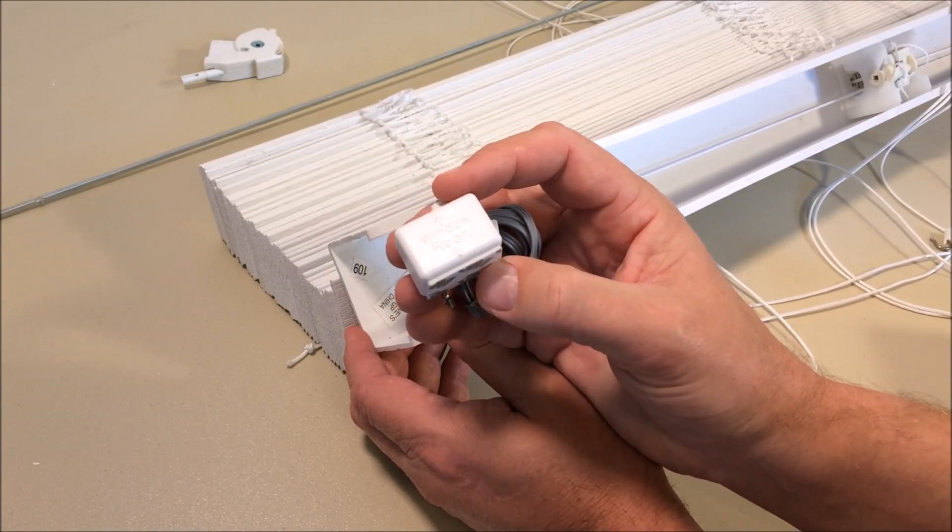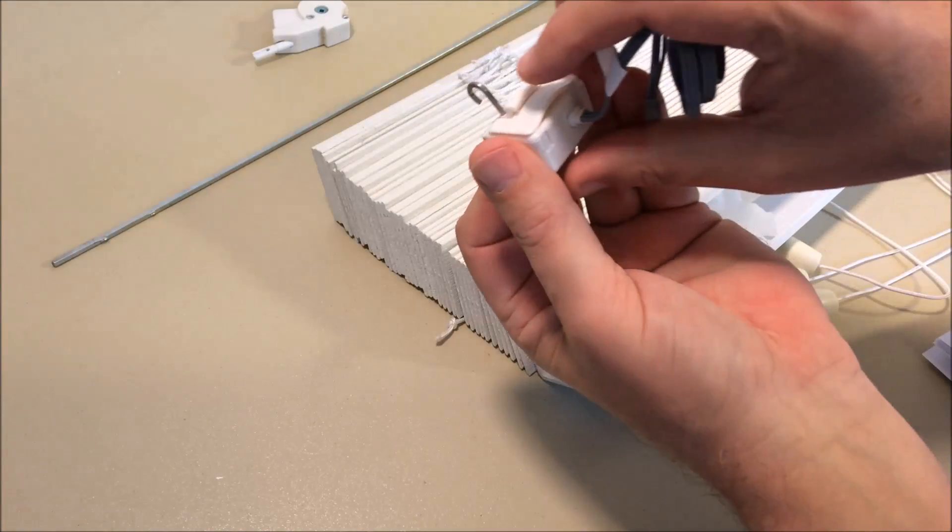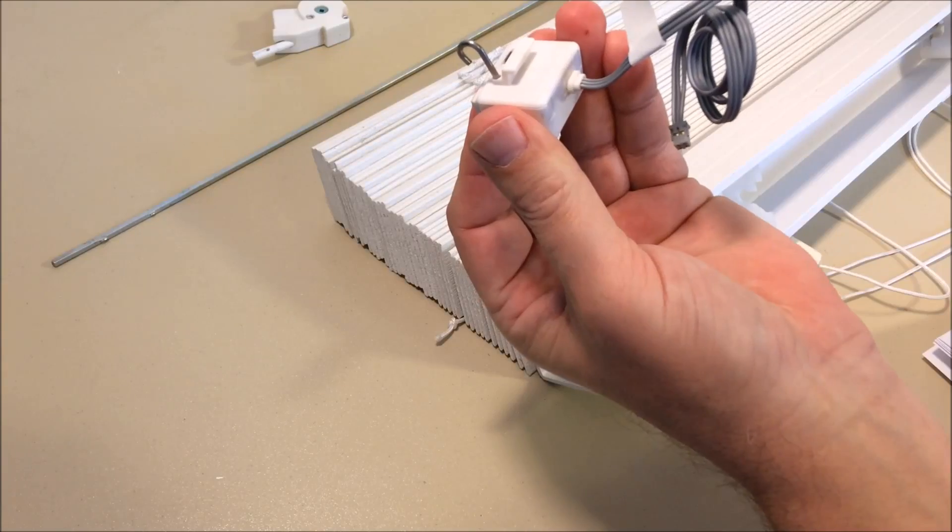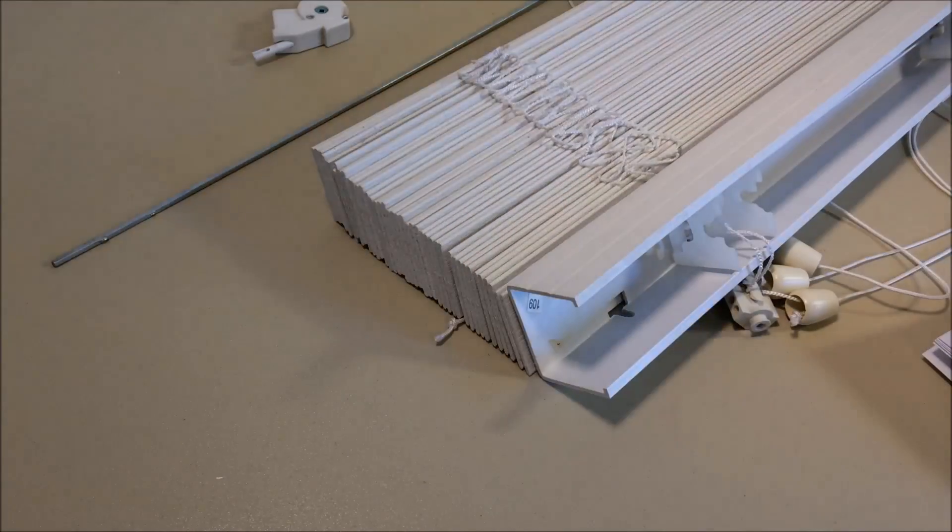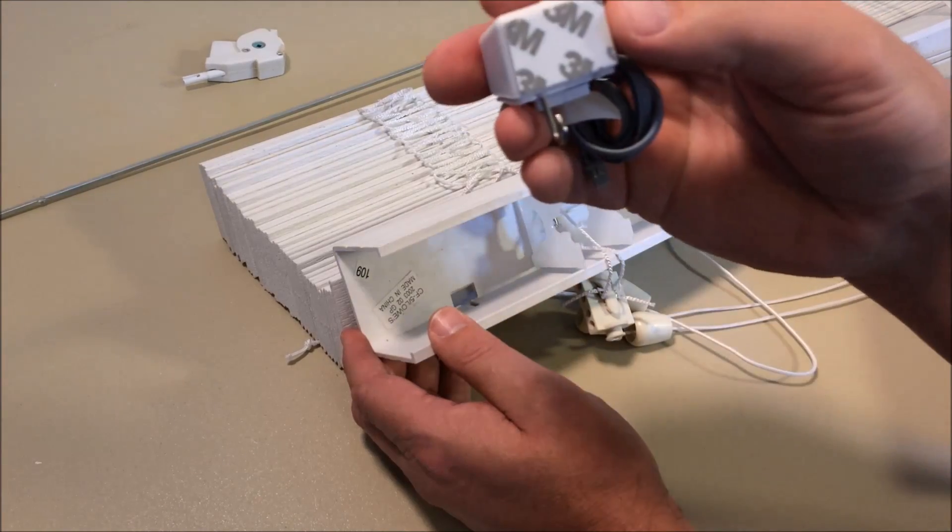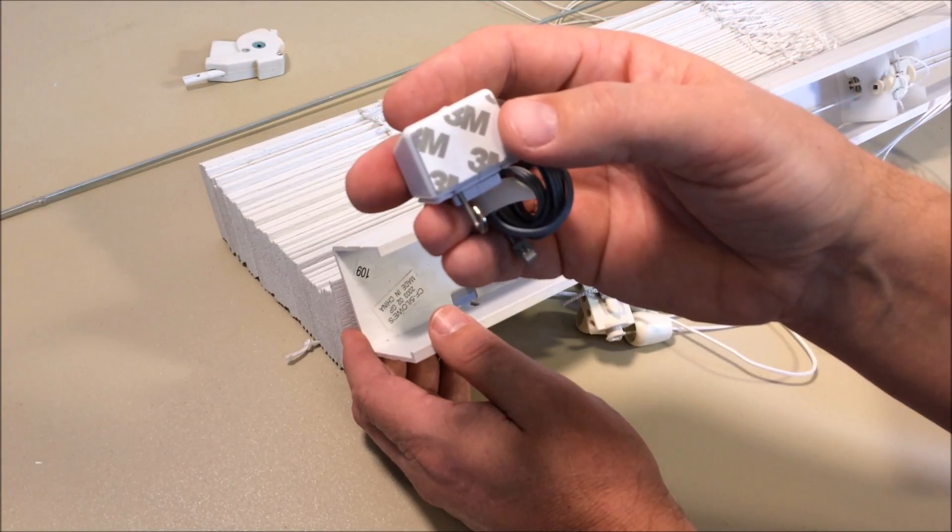The next thing we're going to do is take this manual switch. You have to remove that C clip. Just press down on it, and it comes right off. And we're going to install it inside of our blinds here using the provided two-sided sticky tape.